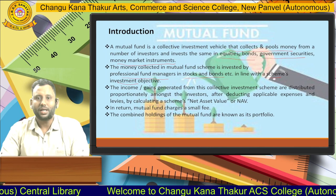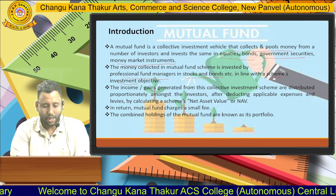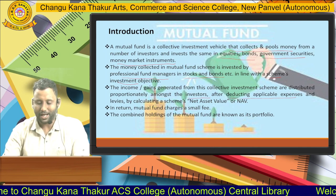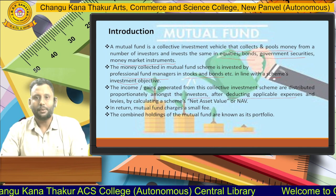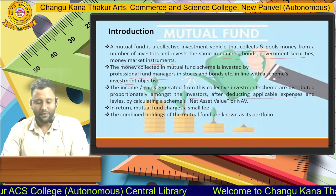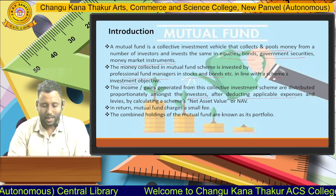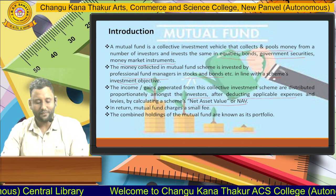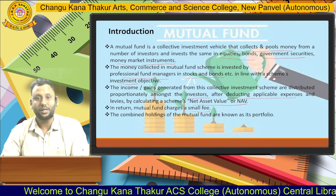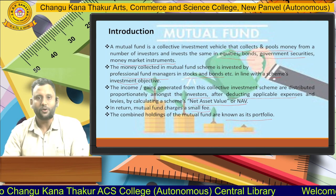The income or gains generated from the collective investment schemes are distributed proportionately amongst the investors after deducting applicable expenses. It will be distributed proportionately to the investors in their NAV, that is Net Asset Value. In return, mutual fund charges some small fees or commissions. The combined holdings of the mutual fund are known as a portfolio.